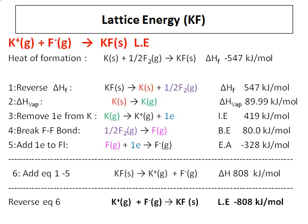I have applied the Born-Haber cycle to other kinds of compounds also. This is KF, where the formula is 1-to-1 mole. But when it comes to compounds like sodium oxide Na₂O or MgCl₂, the calculations become a little more difficult. Refer to the further lattice energy calculations where I have tried to address one of each kind of ionic compound you will come across.